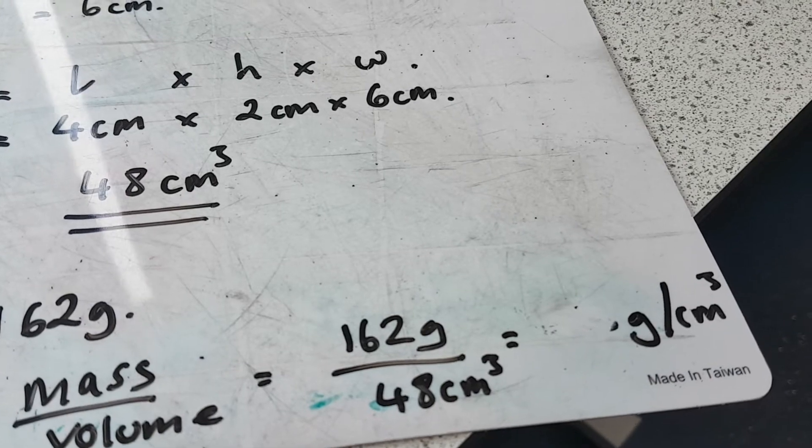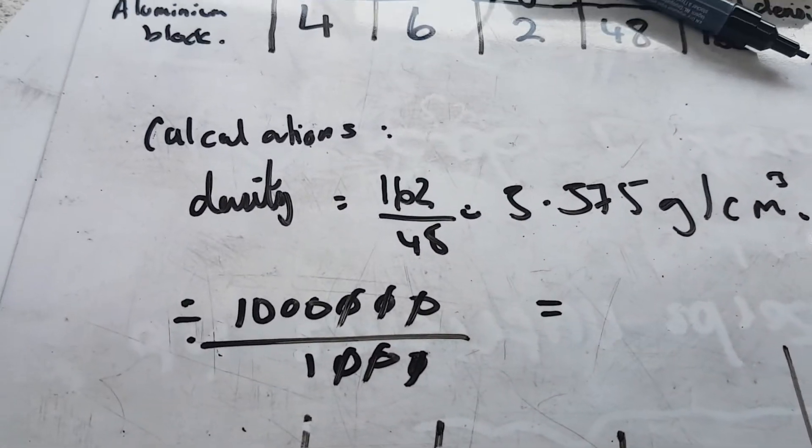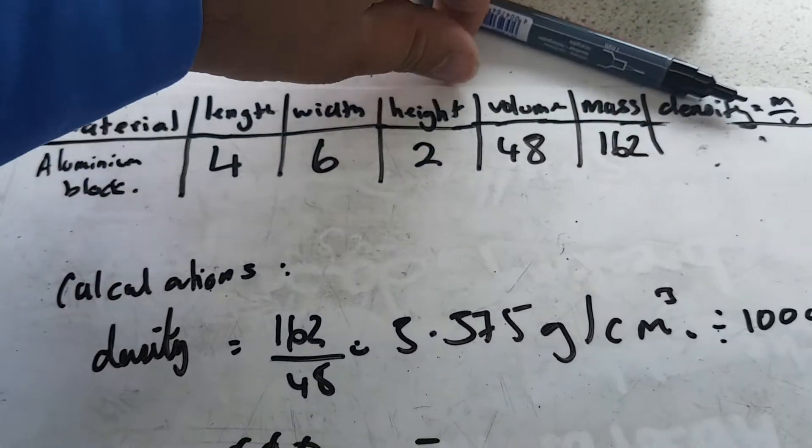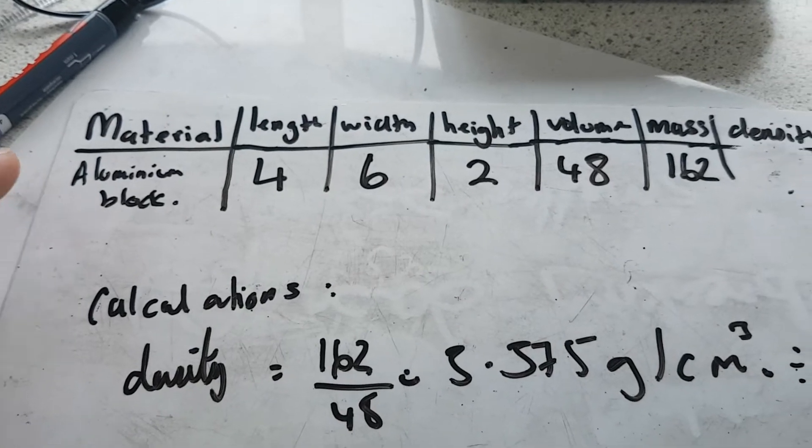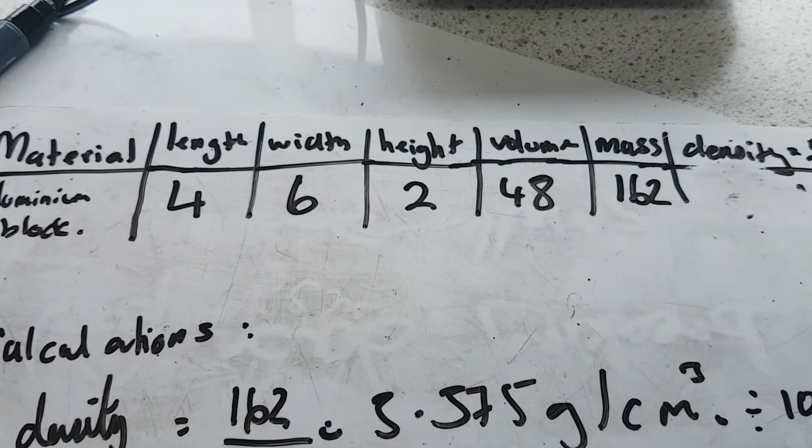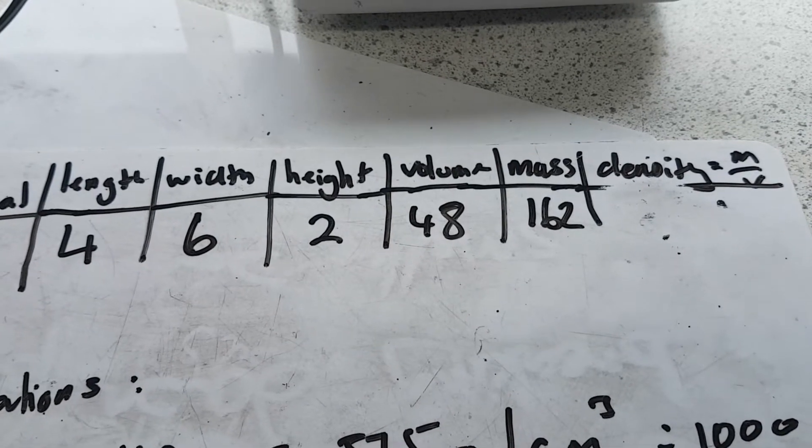And the units will be gram per centimeter cubed. So let's look at the results table. The results table will be something like this. So I've got my material. In this case, I had my aluminum block. My length, width, height and then the volume, which I calculated by multiplying those three together.